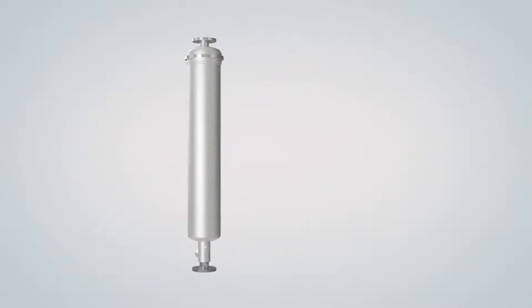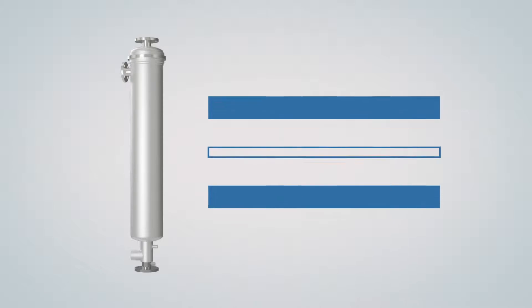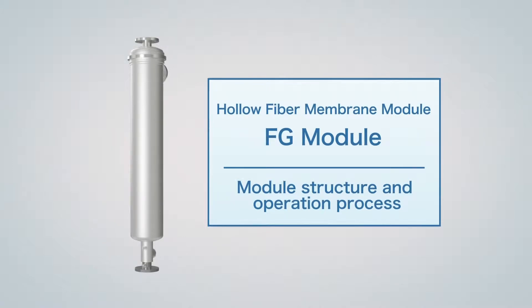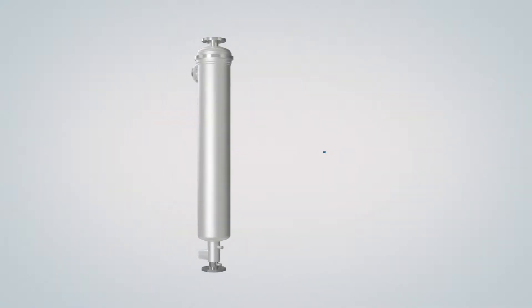The FG module is a high performance hollow fiber membrane module applicable for high turbidity water. Here we will outline the features of the module structure and the operation process.